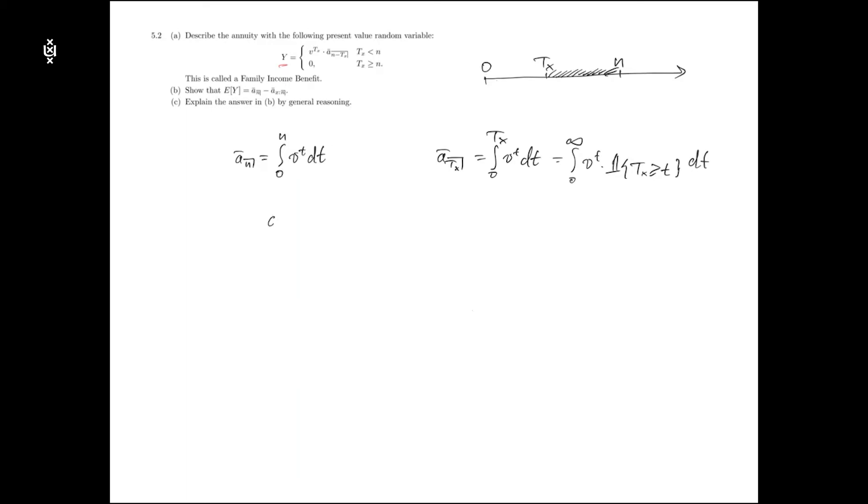In our question, the annuity is paid continuously for a period of n minus Tx years, which also can be written as an integral from 0 to n minus Tx v^t dt.